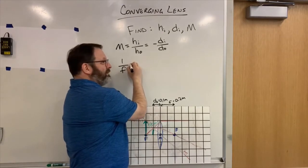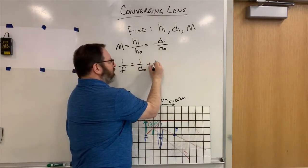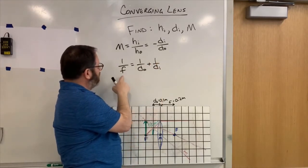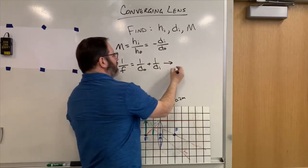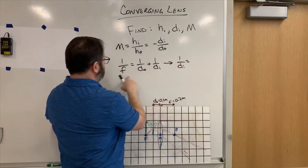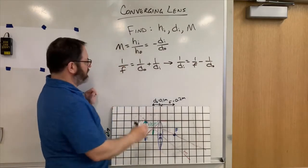Let's try the other one. 1 over F is 1 over distance to the object plus 1 over distance to the image. This one works because I know F and I know distance to the object. So if I rearrange this, 1 over distance to the image equals 1 over F minus 1 over the distance to the object.